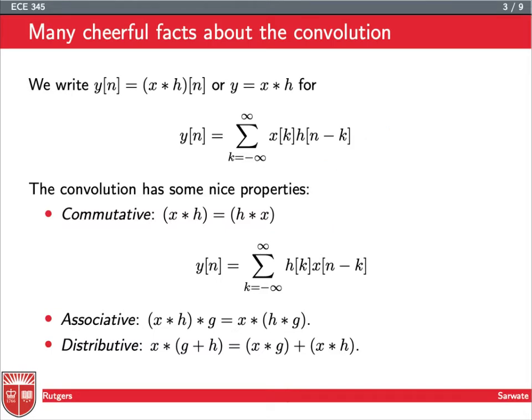And that's a property you can prove just by kind of looking at the definition and then doing a change of variables. Another important fact is that it's associative, so it really is behaving like a multiplication. If I take x star h, and then I pass that through a system g, that's the same as taking x and passing it through a combined system, a combo system, which is h star g. And finally, it distributes over addition, so again, like multiplication.